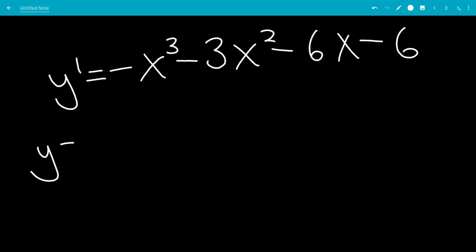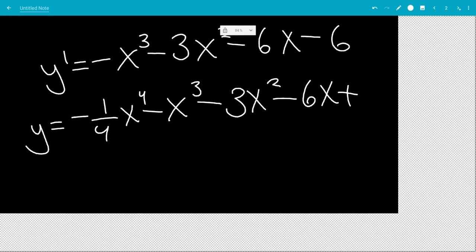So now y is the integral of this. So y will just be minus 1 fourth x to the fourth power minus x cubed minus 3x squared minus 6x plus some constant k.